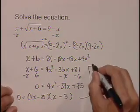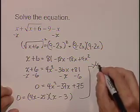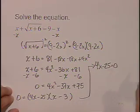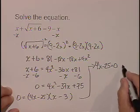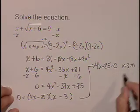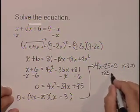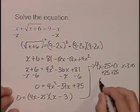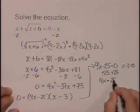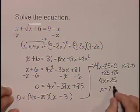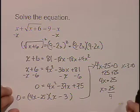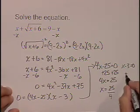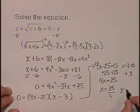So we wind up with 4x minus 25 is equal to 0, and we wind up with x minus 3 is equal to 0. Adding 25, we get 4x is equal to 25, so x is equal to 25 fourths when we divide both sides by 4.